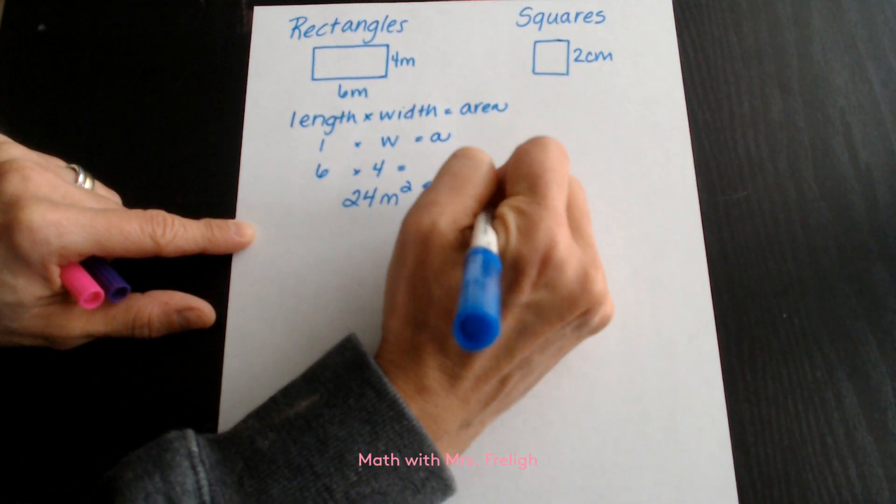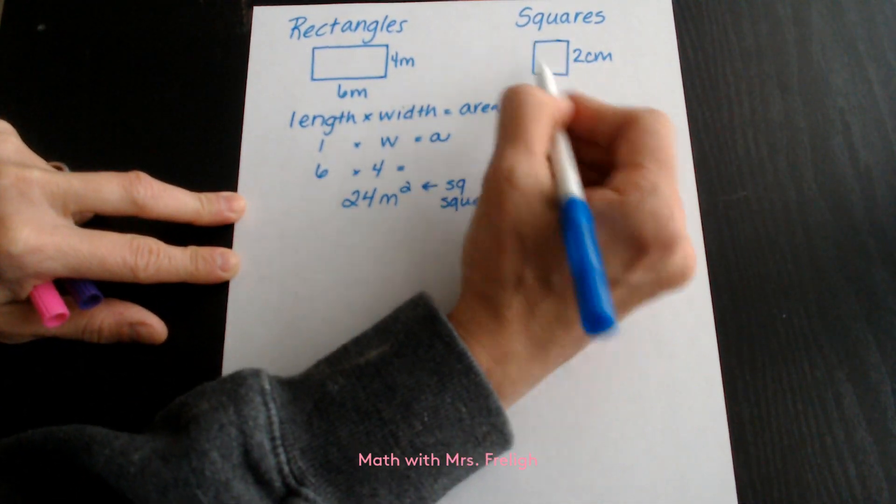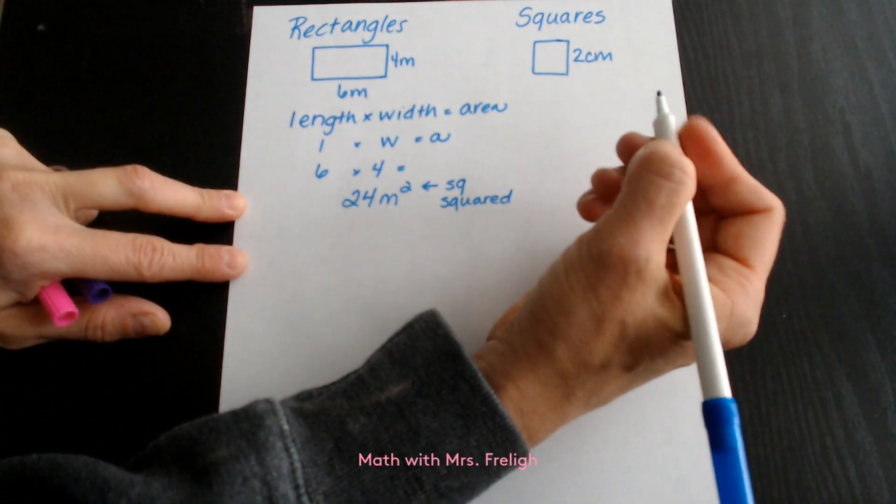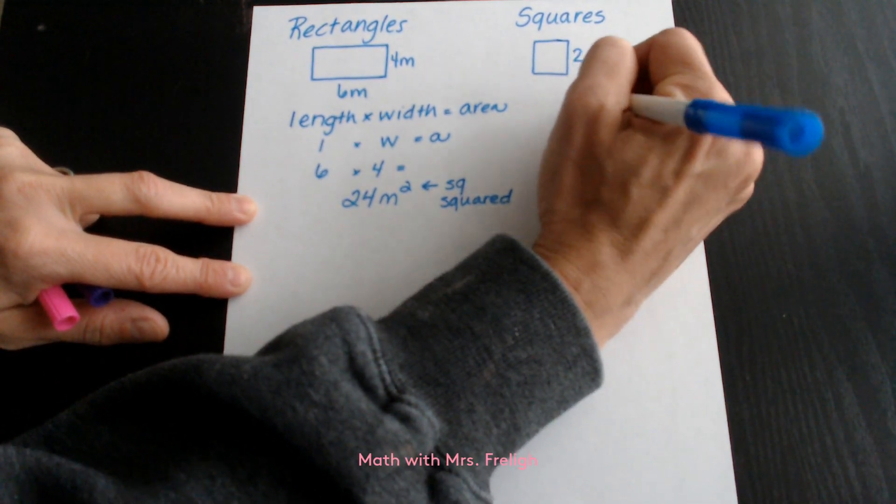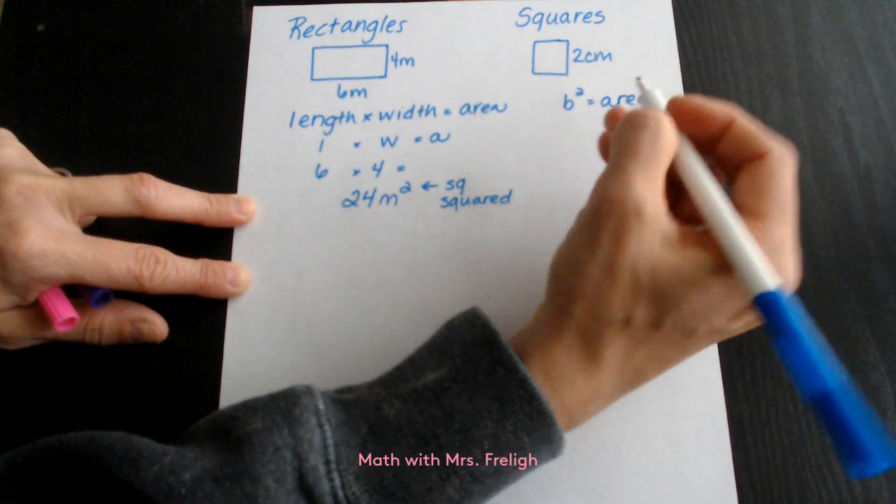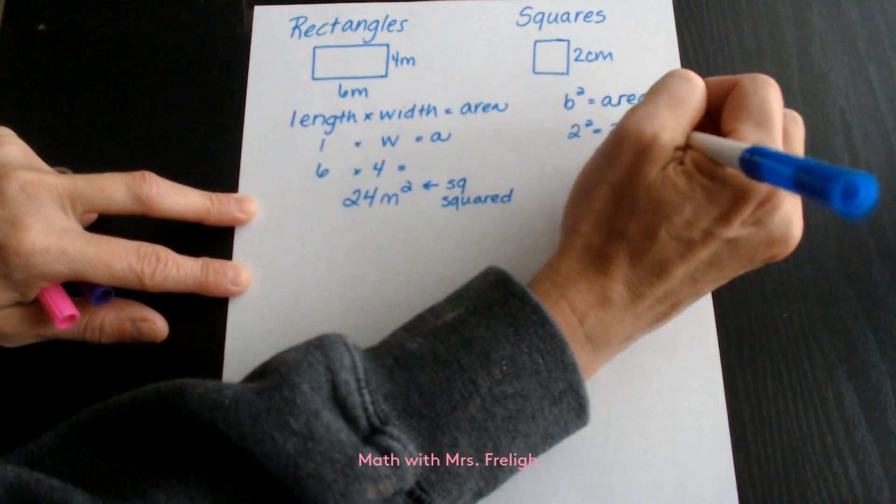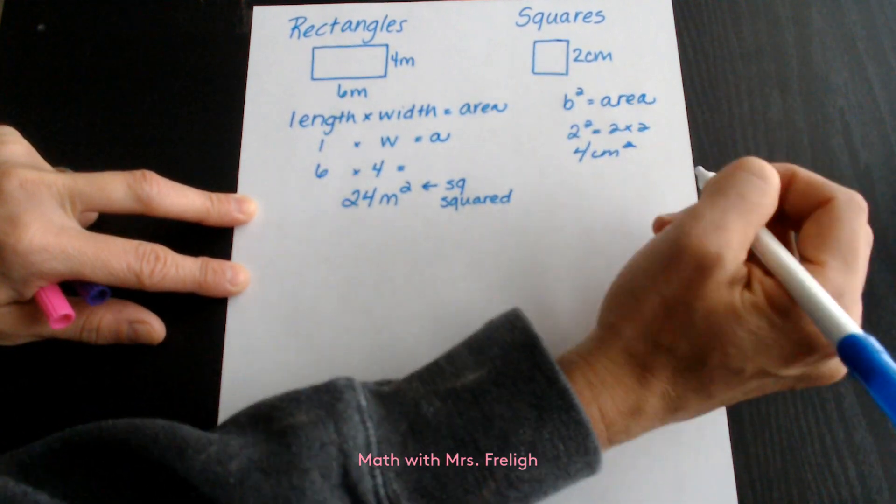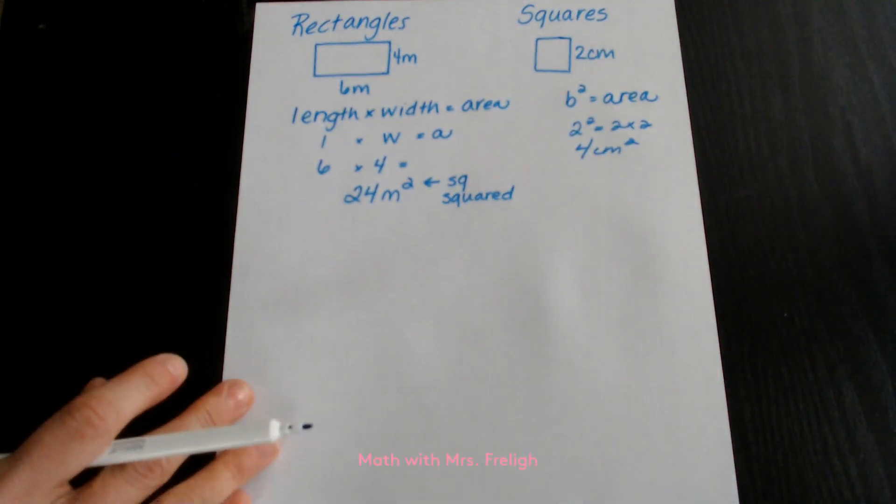or you can write the word squared at the end. When you're looking at an actual square that has all four equal sides, you can use the formula for a rectangle, but sometimes you'll also see an area formula that is base squared equals area. Base would mean any one of the four sides. So we could do 2 to the second power, which means 2 times 2, which would be 4, and it would be 4 centimeters squared. When you have a square, you can use either length times width or the base squared formula.